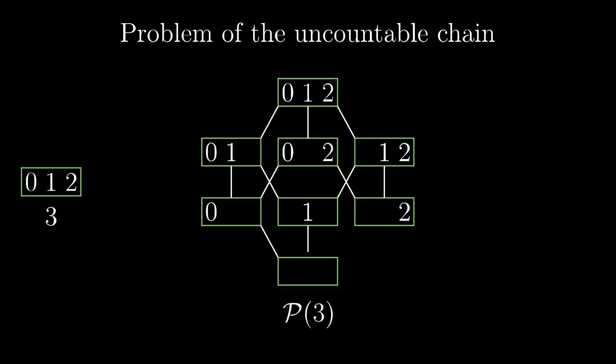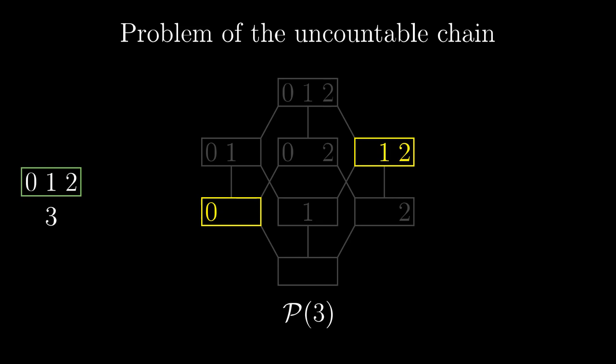Any powerset is partially ordered by set inclusion. We draw the subsets lower as the lower elements in this partial ordering, and when there are two sets such that none of them is a subset of the other, we say that they are incomparable.